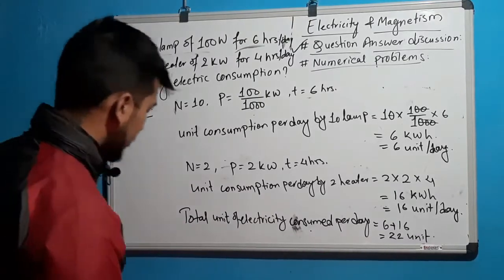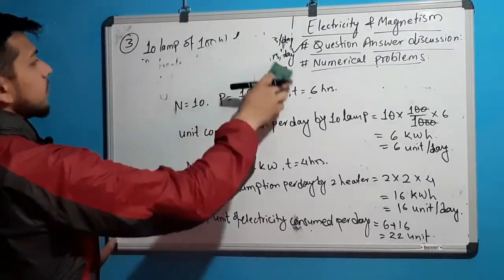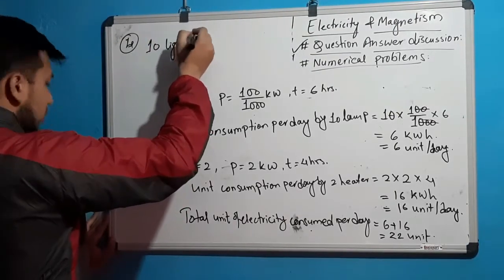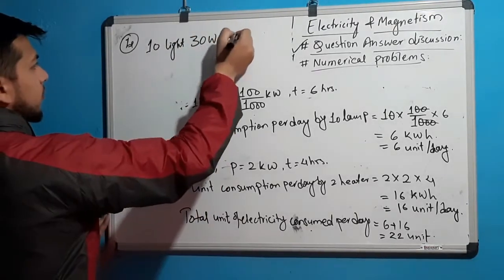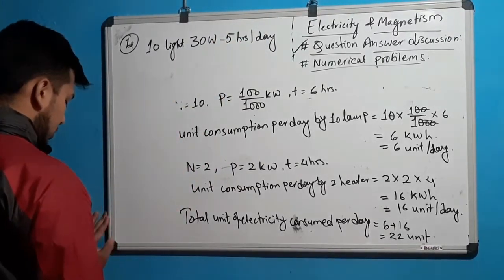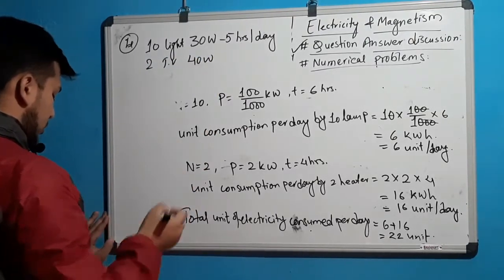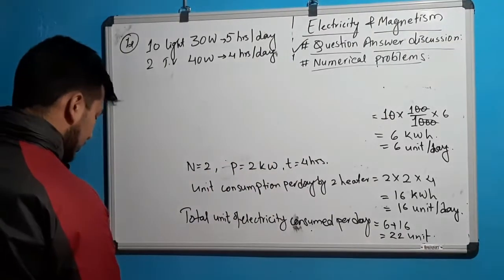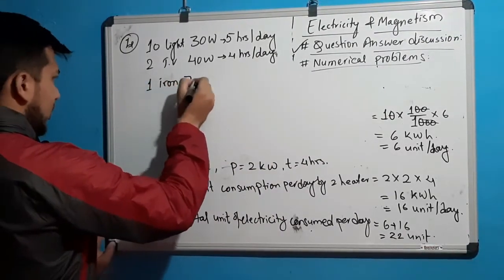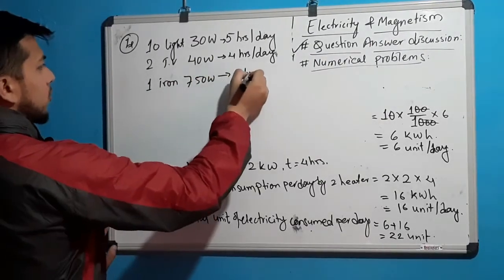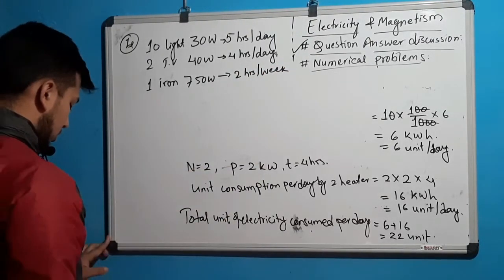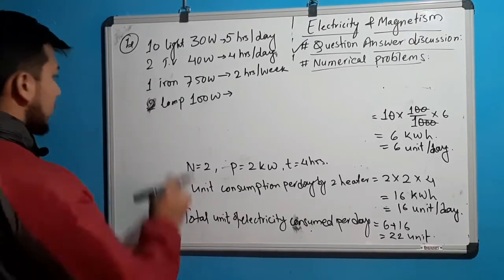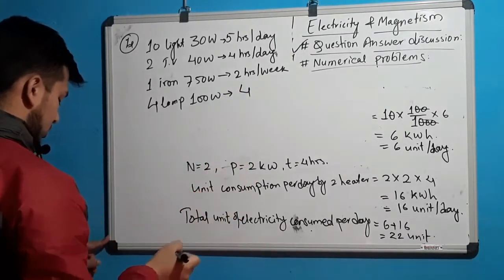The next question: in a house, there are many electric appliances. 10 lights of 30 watt used for 5 hours per day; 2 TVs of 40 watt used for 4 hours per day; one iron of 750 watt used for 2 hours per week; and 4 lamps of 100 watt used for 4 hours per day.